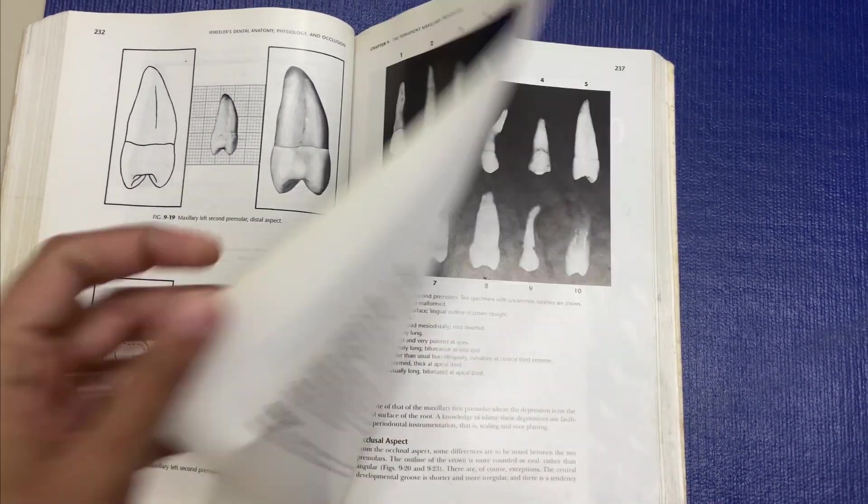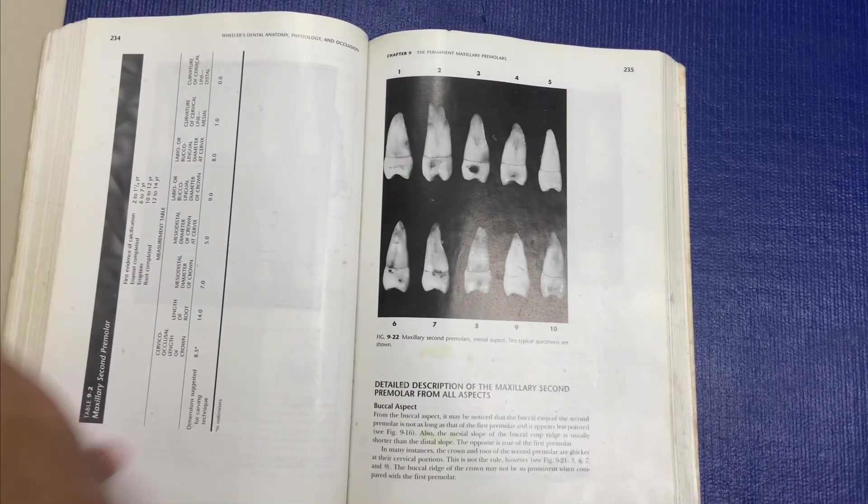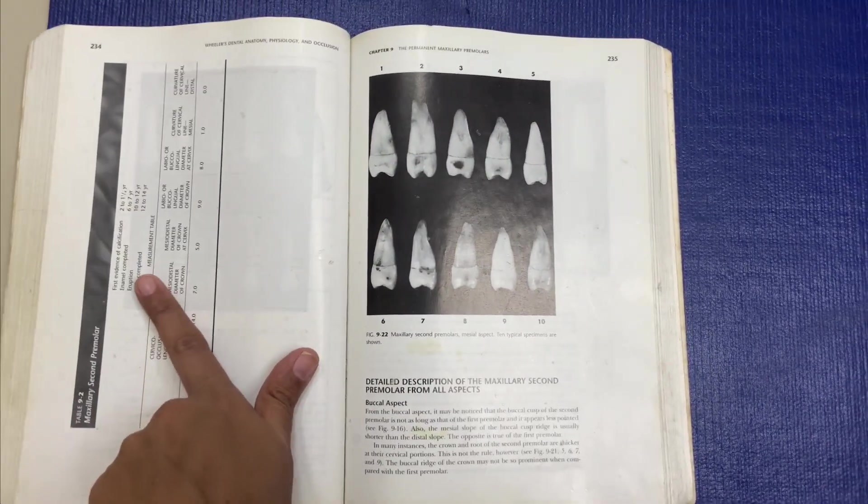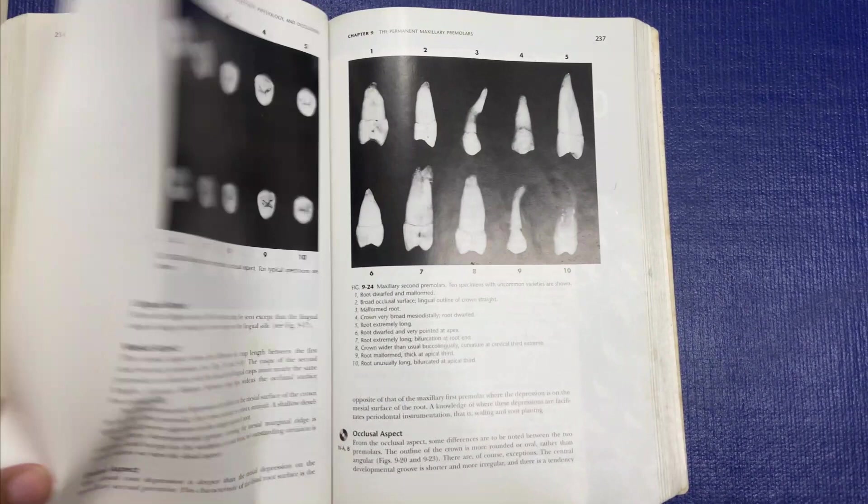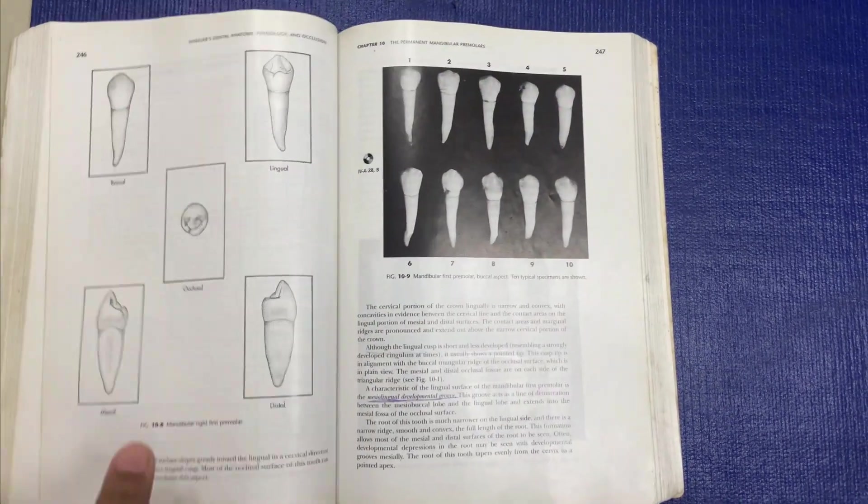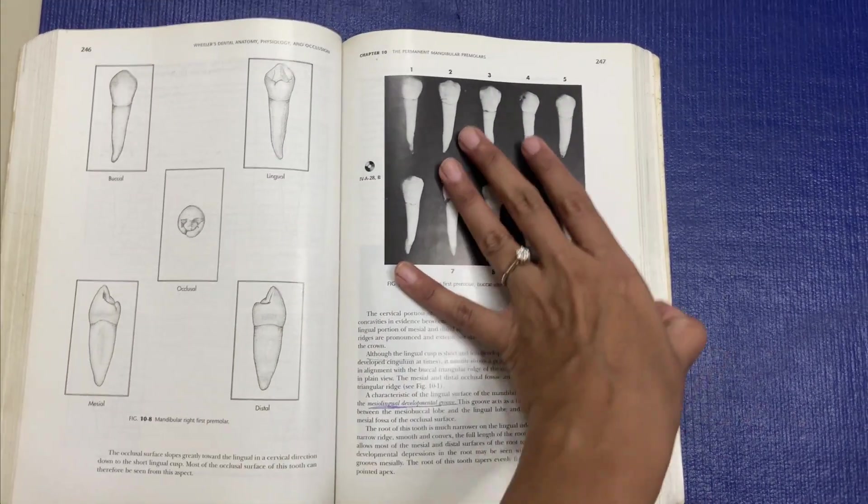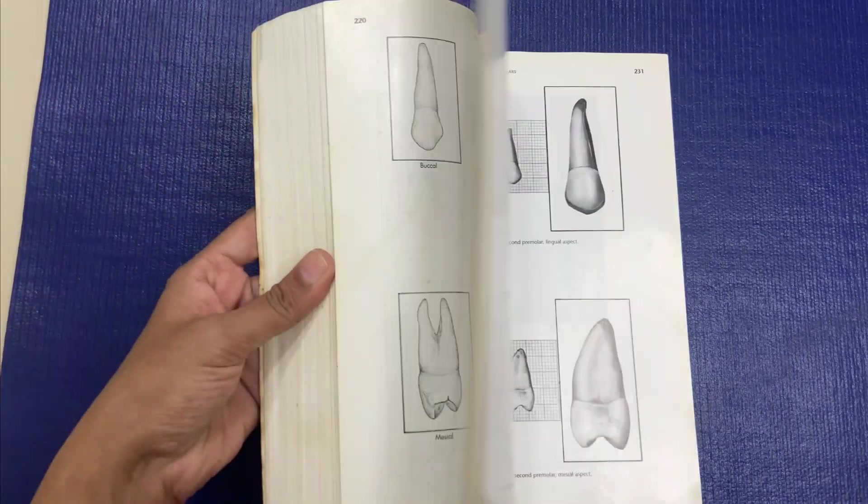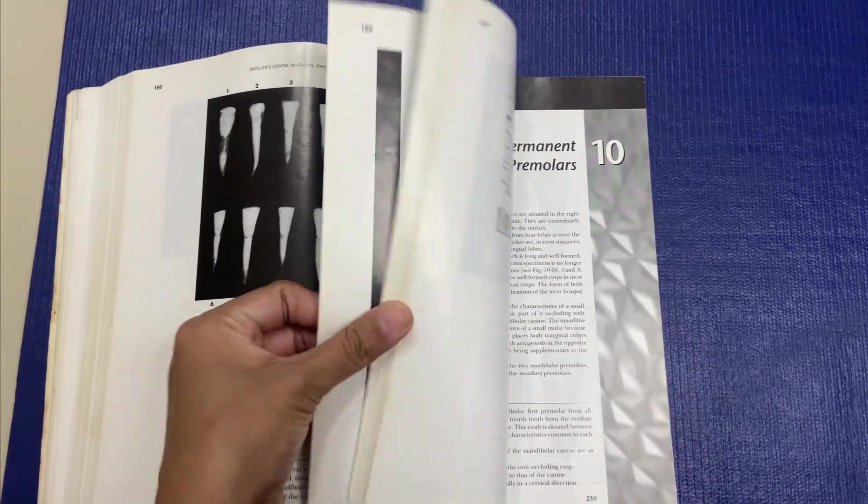With images, all the aspects: labial, lingual, mesial, distal, occlusal. All aspect images and graphs are also given along with it. The measurement tables are given. If you can see, this is the measurement table. This is how for all teeth it is given.